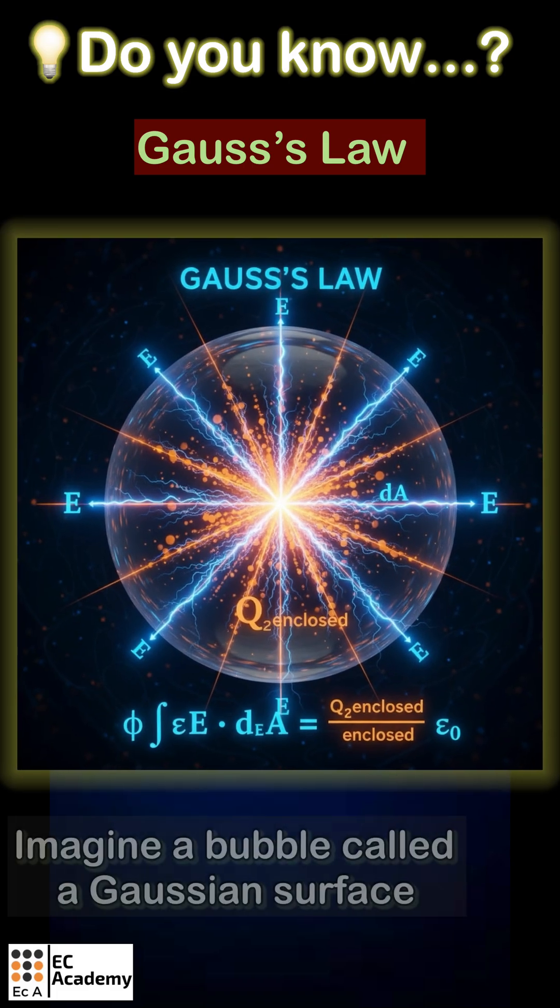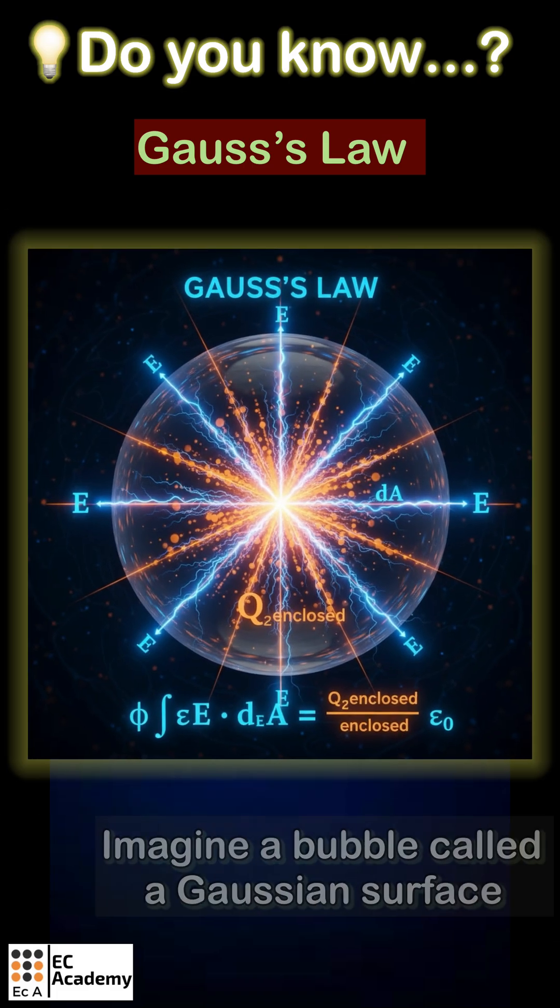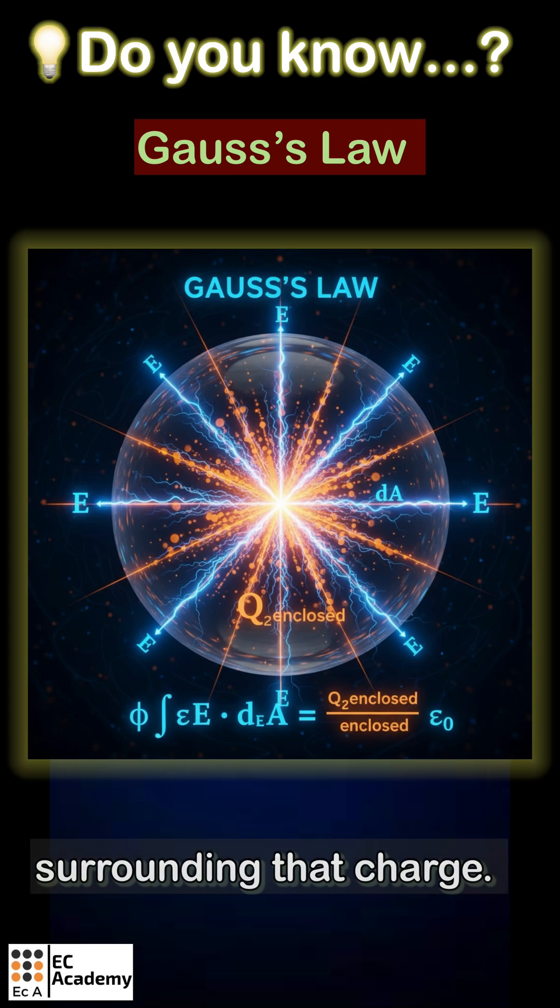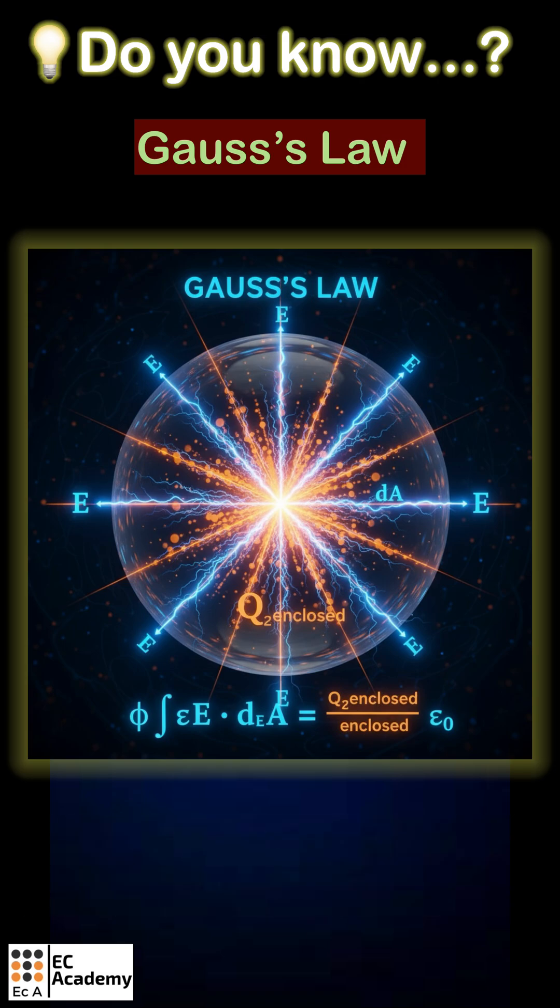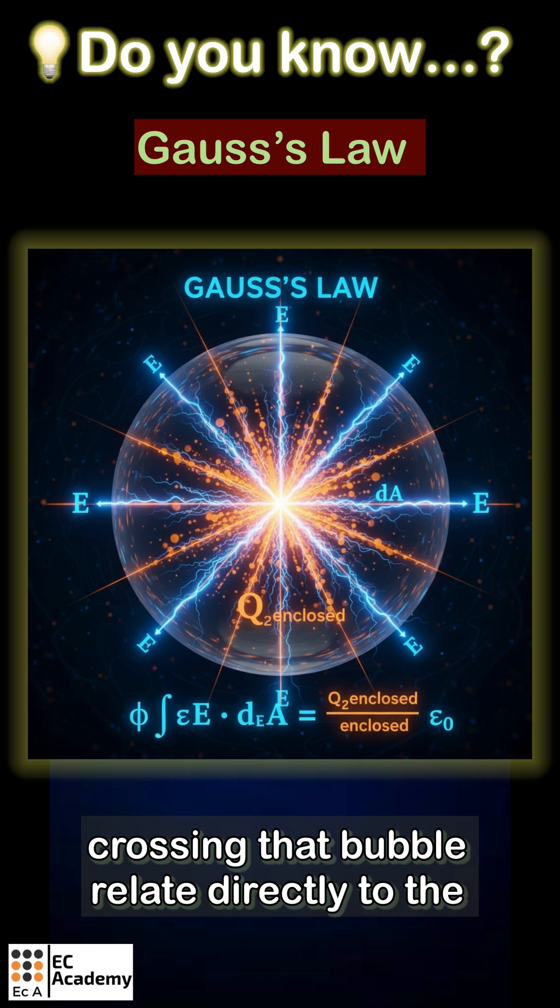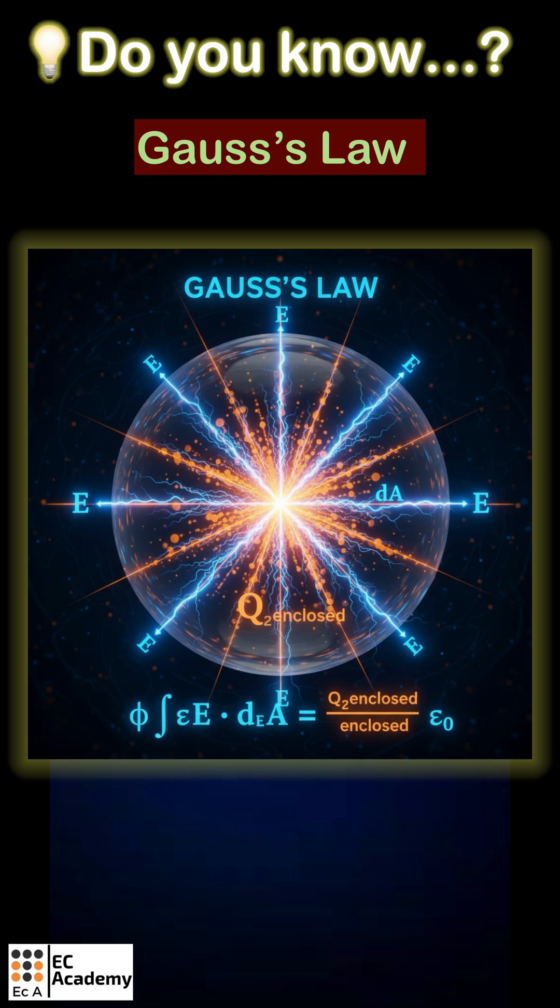Imagine a bubble called a Gaussian surface surrounding that charge. This law tells us the electric field lines crossing that bubble relate directly to the enclosed charge.